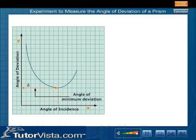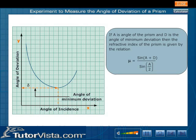The shape of the graph obtained by plotting angle of incidence along the x-axis and angle of deviation on the y-axis shows that for a particular angle of incidence, the angle of deviation is least. The corresponding angle of deviation is called the angle of minimum deviation.